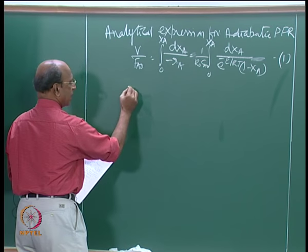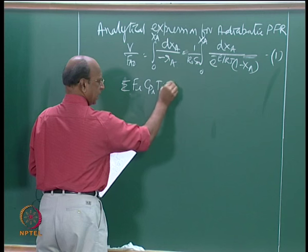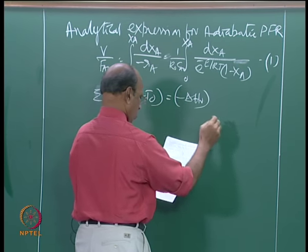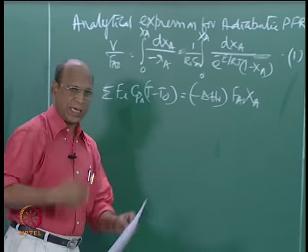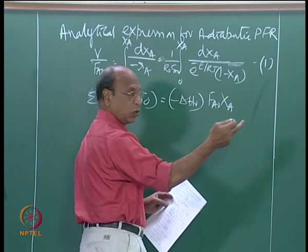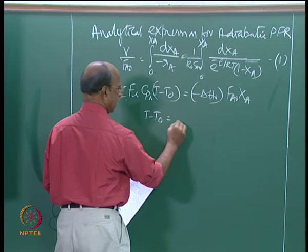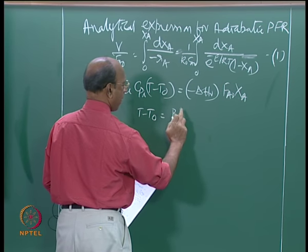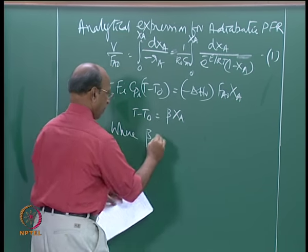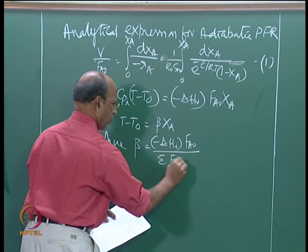The other energy balance equation is: sigma of F_i * C_Pi * (T − T_0) equals minus delta H_R times F_A0 times X_A. After substituting, since X_A0 equals 0, we simply write X_A. So T minus T_0 equals beta times X_A, where beta equals minus delta H_R times F_A0 divided by sigma of F_i * C_Pi.